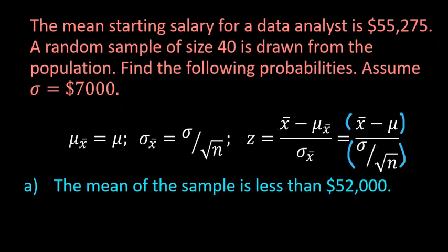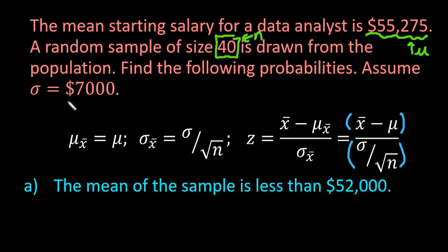What we need to do is find our most important information in the problem. We need the mean of our population, which is $55,275; our sample size, which is 40; and our population standard deviation, which is $7,000. Those are the three things we need to enter into the calculator to do our calculations.